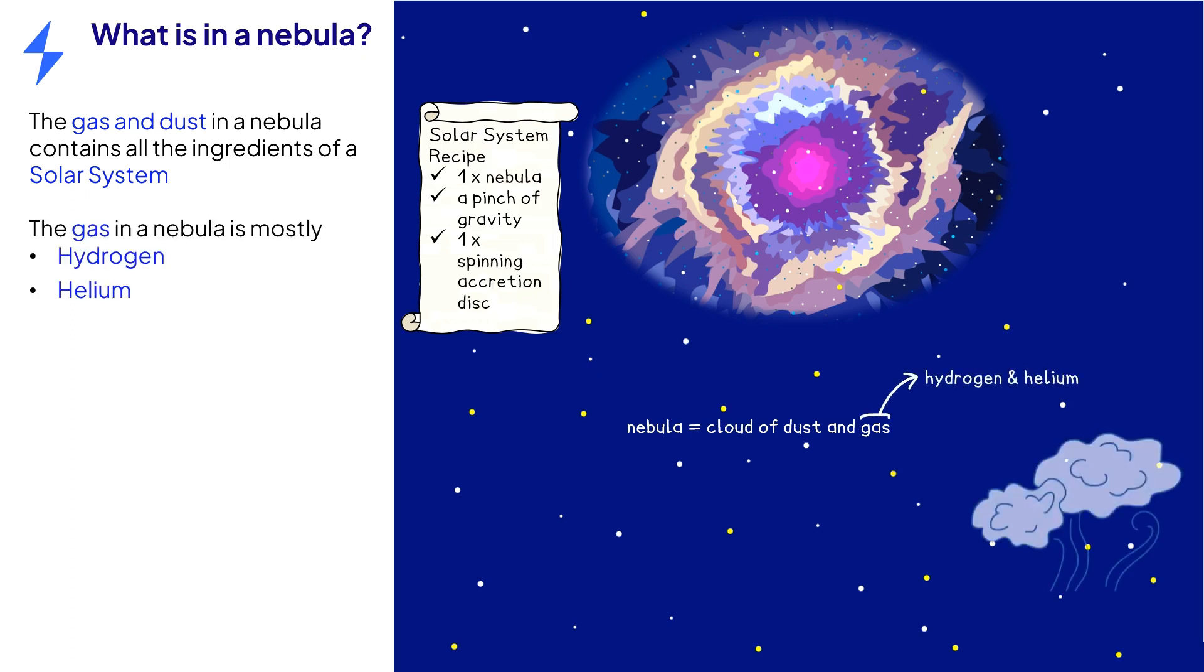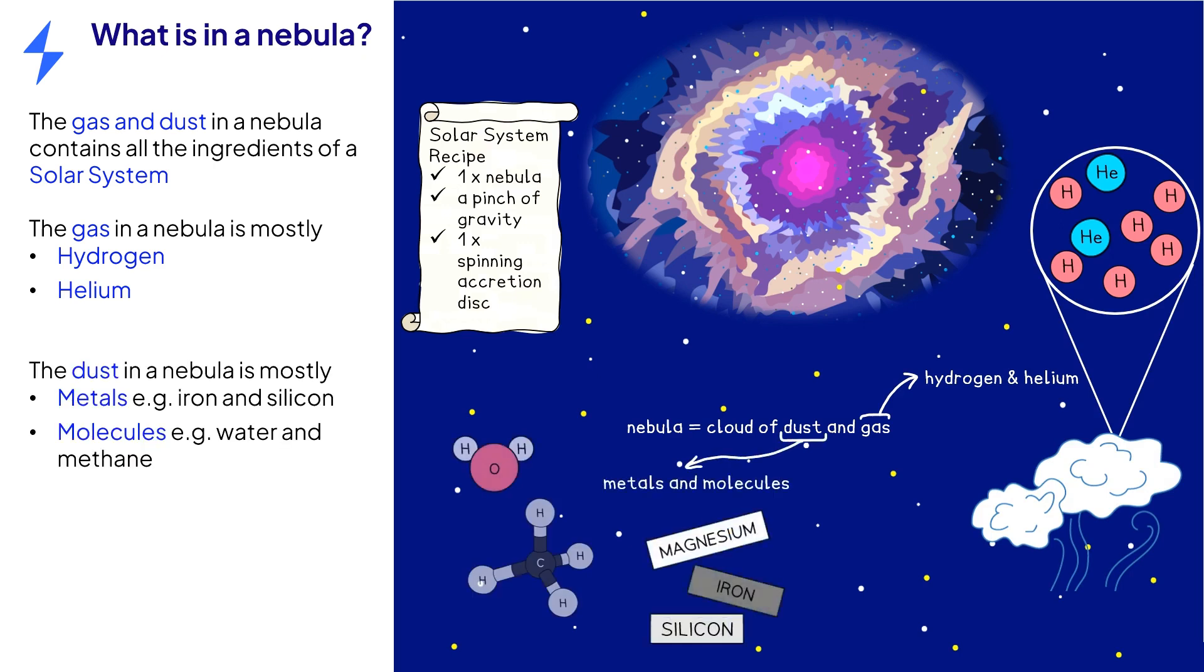The gas in a nebula is mostly light elements such as hydrogen and helium gas, whereas the dust is a mixture of heavier elements such as metals and simple molecules like water and methane. The distinction between light elements and heavy elements will be important when explaining the difference between the formation of the inner planets and the outer planets.